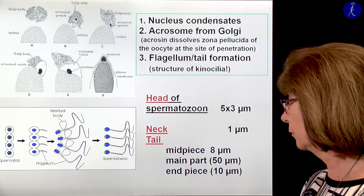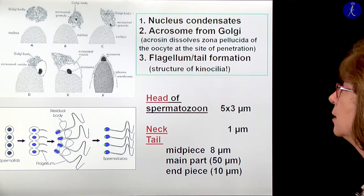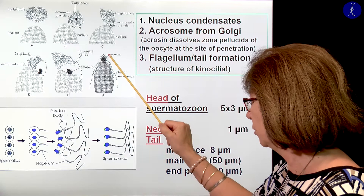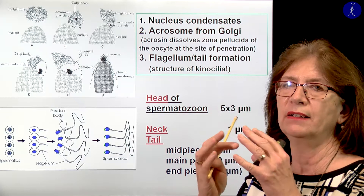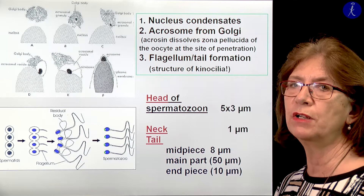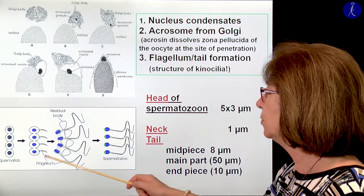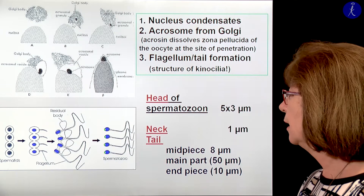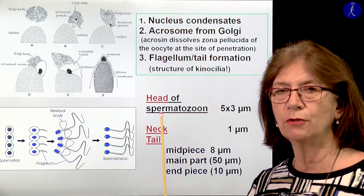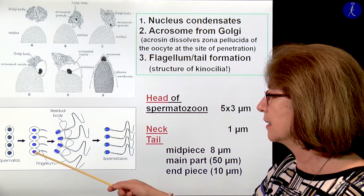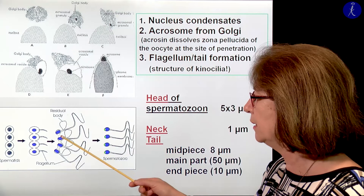What happens with the spermatid? First, the nucleus will be condensed — more and more condensed. From the Golgi body, the acrosome will develop — a small package of densely packed enzyme molecules. This enzyme is acrosine. The acrosine will be exposed during fertilization and it will dissolve the zona pellucida of the oocyte. At the opposite end, the tail — the flagellum — will grow. The main structure within this tail is the microtubules — the axoneme — which is also the structure of the kinocilia, so it is mobile. The excess cytoplasm is pinched off as a residual body, and when fully ready, the heads get separated from each other.